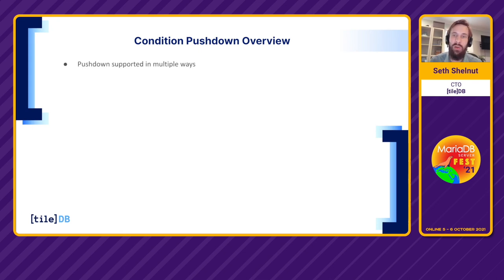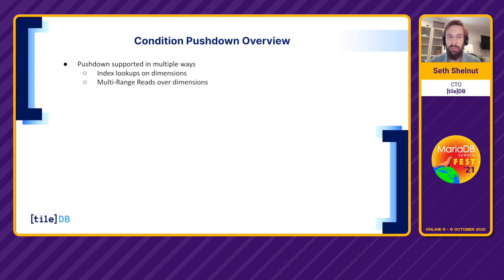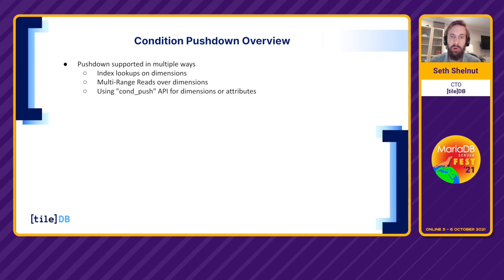MariaDB offers a number of ways to perform pushdowns. The first and most simple way is index lookups, which also facilitates multi-range reads that work on top of indexes. And the third, probably most importantly, is the condition pushdown API, which allows us to push conditions on dimensions or attributes through a number of different predicates, without relying on index-style scanning.